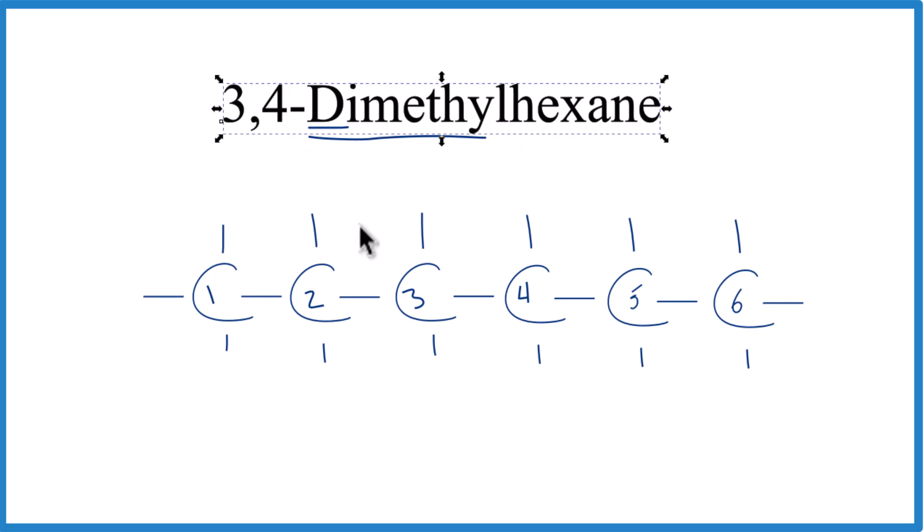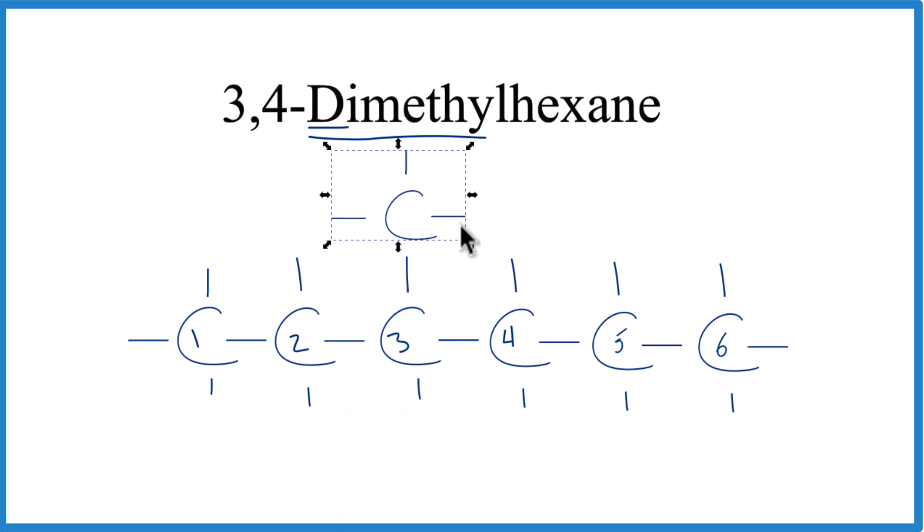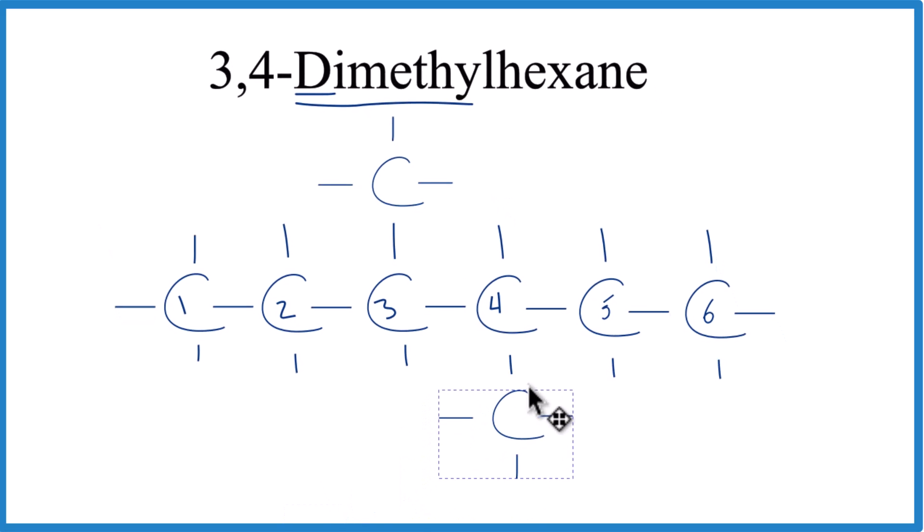So 3,4-dimethyl, one, two, three. We'll put a methyl group on the third carbon here, put that right there, and then on the fourth. We could put it up top, but I'm going to put it down here just because it's a little easier.